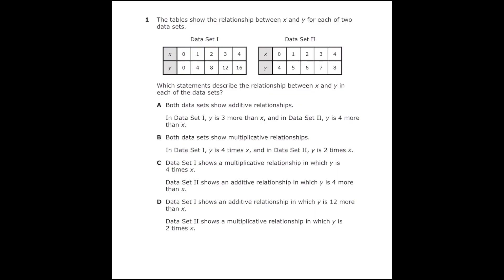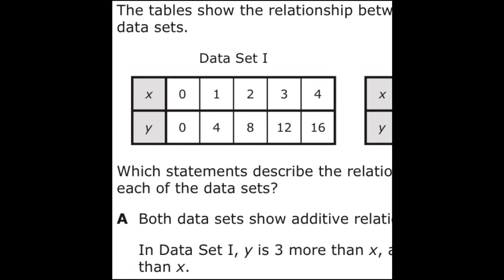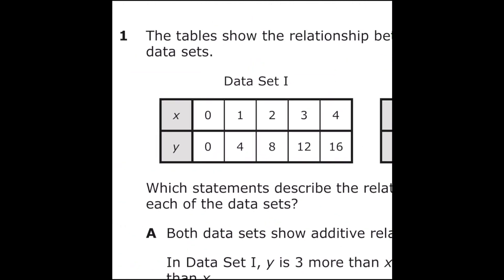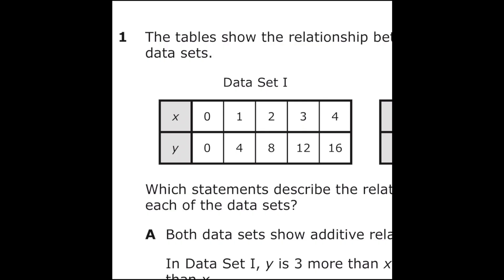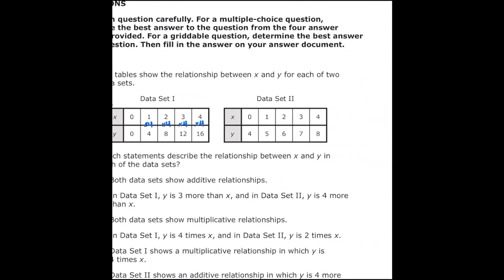To start off, I'm going to take a look at data set number one. If I'm just looking at this table, I'm noticing that each x value is being multiplied by four to get the y value. So I'm just going to make a note over here that this table is times four every single time.